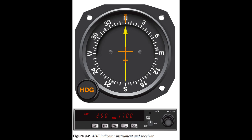Relative bearing (RB) is the number of degrees measured clockwise between the aircraft's heading and the direction from which the bearing is taken. The aircraft's magnetic heading (MH) is the direction the aircraft is pointed with respect to magnetic north. The magnetic bearing (MB) is the direction to or from a radio transmitting station measured relative to magnetic north.